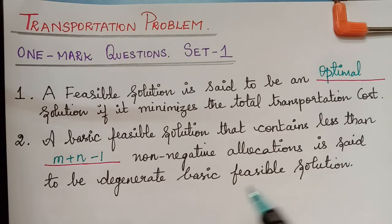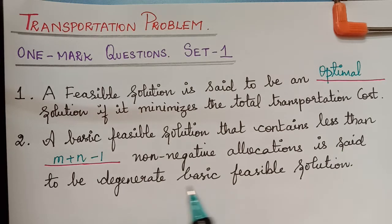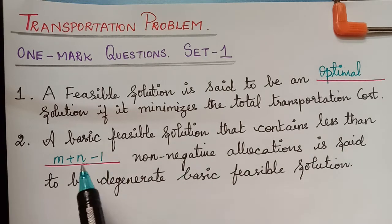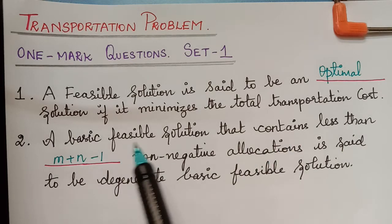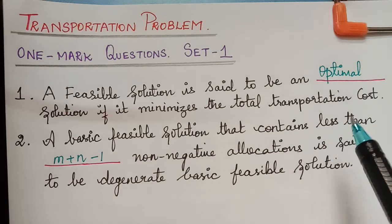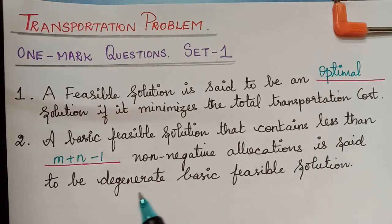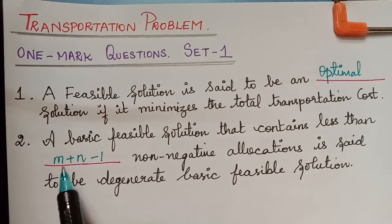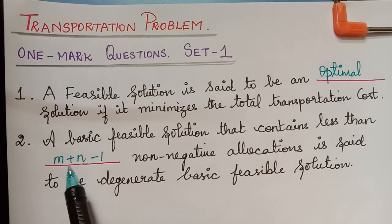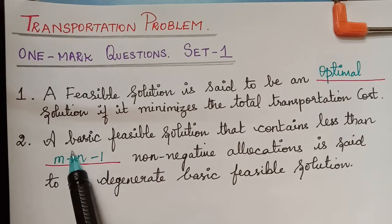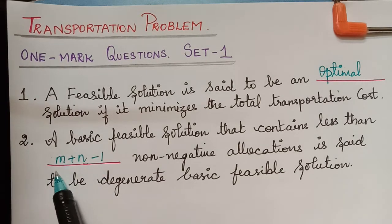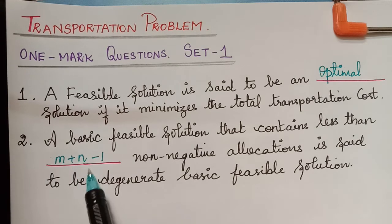But if it is equal to m plus n minus 1, then it will be a non-degenerate basic feasible solution. The answer is m plus n minus 1, where m is the number of rows and n is the number of columns.